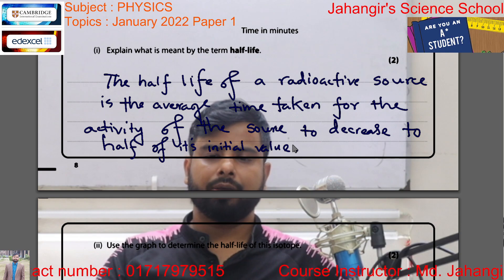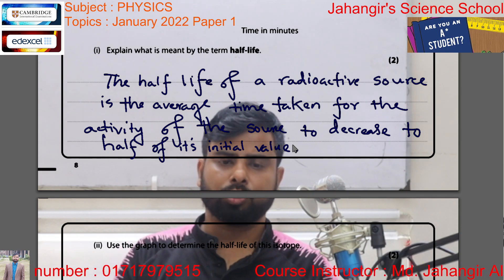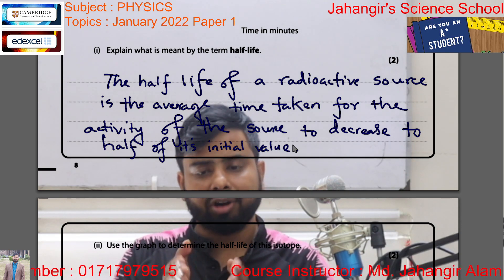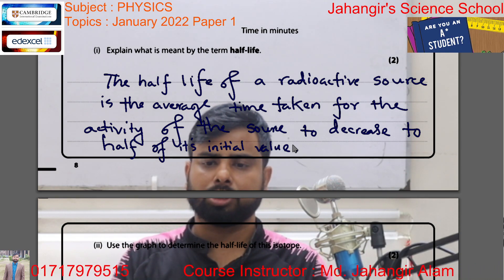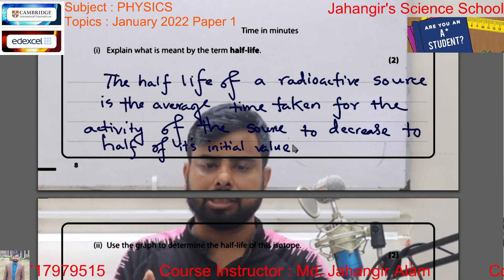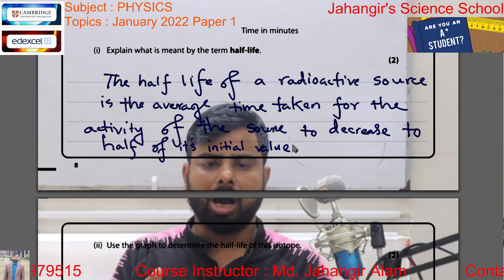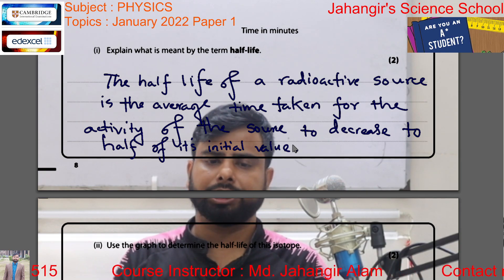The half-life of a radioactive source is the average time taken for the activity of the source to decrease to half of its initial value.